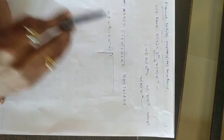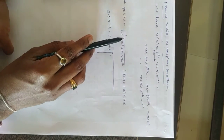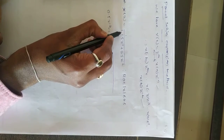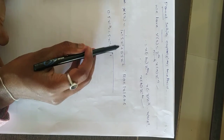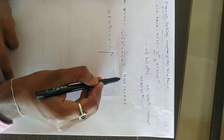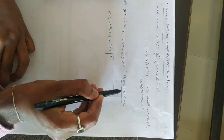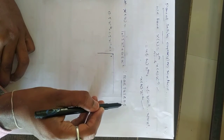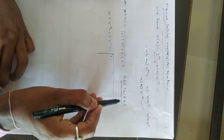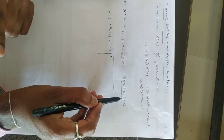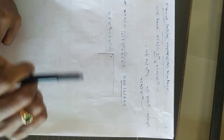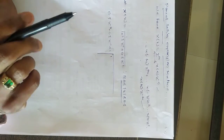For the reversal method, this is the same problem: X(z) = 1 / (1 - 1.5z^(-1) + 0.5z^(-2)), but now the ROC is |z| < 0.5. This means it is a left-sided sequence, and the ROC lies inside the unit circle.